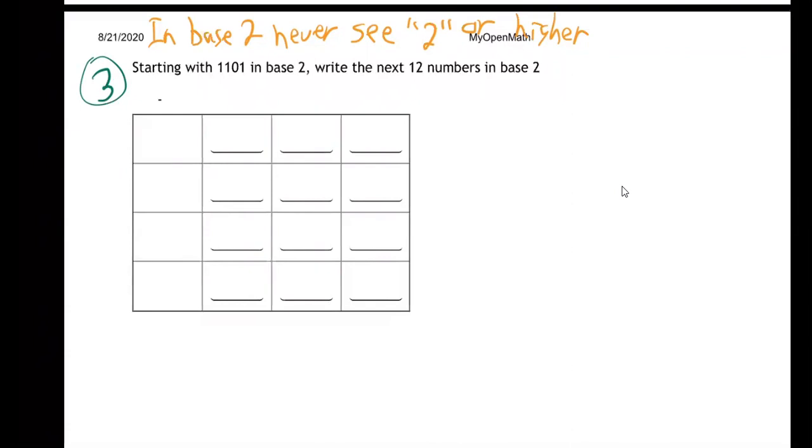What do you do when you need a 2? Instead, you write 0 and carry to the left. So it's exactly the same, this system is exactly the same, it just feels so weird. Here we go. 1, 1, 0, 1. So what comes next? They want me to write the next 12 numbers in base 2. So after 1101...